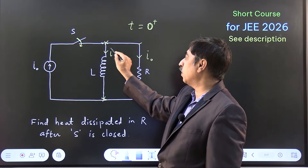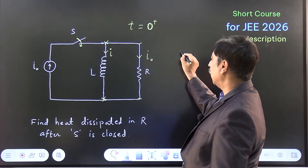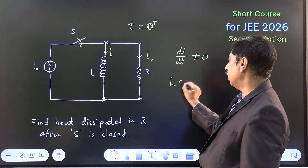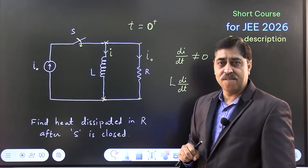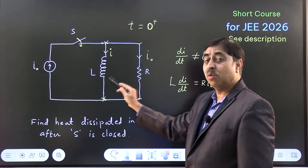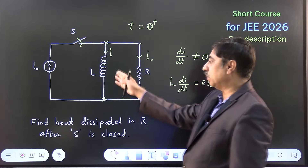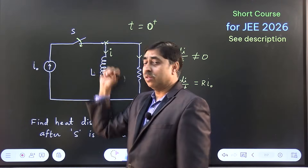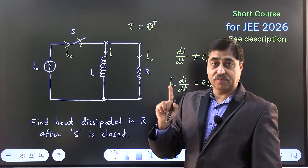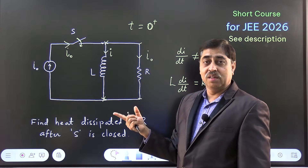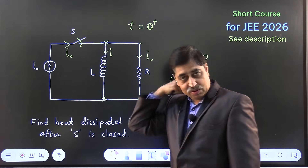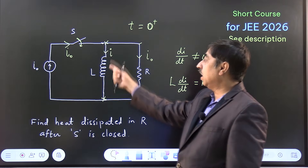So in the inductor path, the instantaneous value of current is 0 but di/dt is not zero. There is an EMF induced in the inductor, and numerically its magnitude should be equal to R × I₀. So the current is 0 but the rate of change of current is not zero immediately after you close the switch. The current begins to increase in the inductor. Since this is a constant current source, the total current is fixed at I₀, so as the inductor current increases, the current through the resistor starts decreasing.